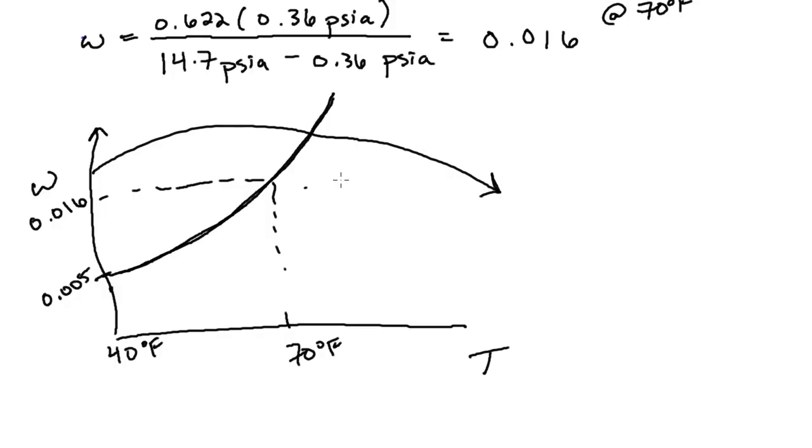In the last video we were investigating how much moisture in terms of absolute or specific humidity can air hold at a given temperature. We saw that if you go up in temperature the air can hold more moisture and it will have some curve and we have this omega max that you can have.